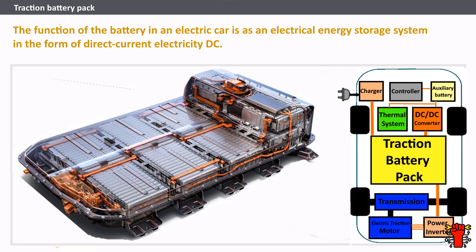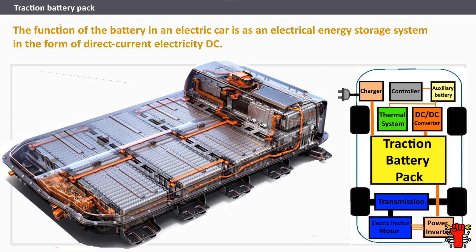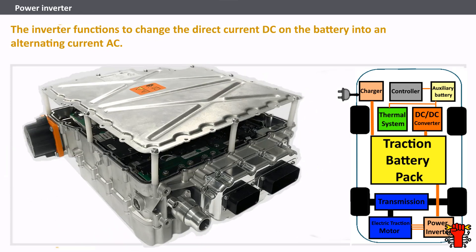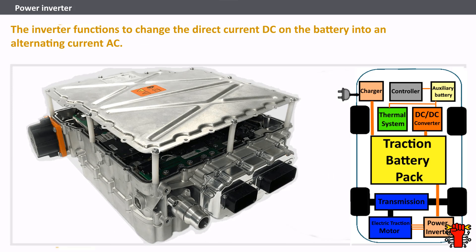The type of battery used is a rechargeable battery arranged to form what is called a traction battery pack. There are various types of electric car batteries. Lithium-ion batteries, renowned for their high energy density, dominate the electric vehicle landscape, outperforming alternatives like lead-acid and nickel-metal hydride batteries.